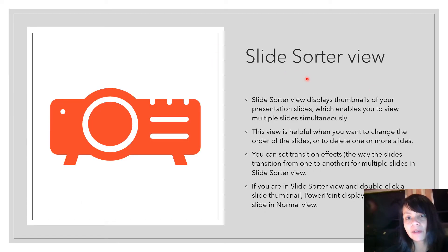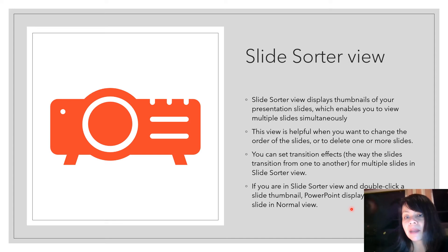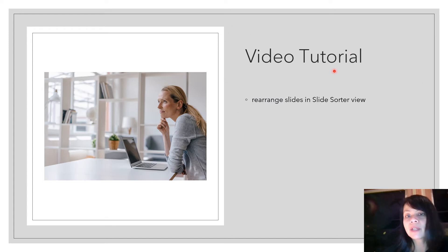The slide sorter view displays thumbnails of your presentation slides, enabling you to view multiple slides at the same time. This view is very helpful if you want to change the order of slides, delete slides, or change transition effects for multiple slides. Transition effects are the ways slides transition from one to another. If you're in slide sorter view, you can double-click on a slide thumbnail and PowerPoint will display that slide in normal view.